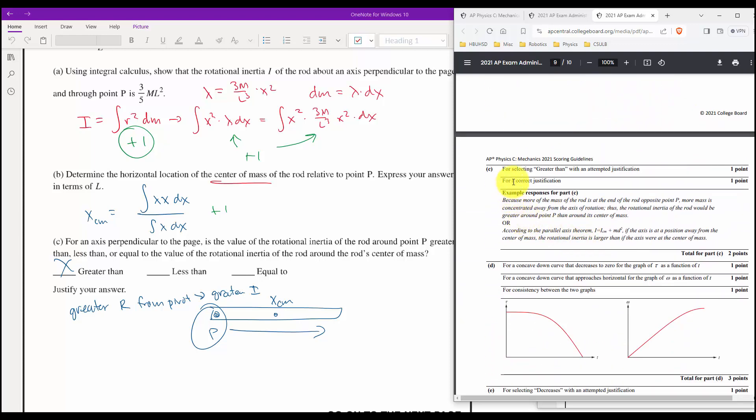And then there's two more points altogether that we're not getting. That's a lot of stuff there. Then for C, for selecting greater than, that'd be a point. And for correct justifications, it's because more of the mass of the rod is at the end for P. Yeah. So they're, and then they also have like a parallel axis theorem equivalent. So that technically would be two points, but, you know, not sure. It says with an attempted justification. So if you put greater than and just wrote something, you would at least get a point there. And then this technically would be worth another point. Although I'm going to call that as a possible.